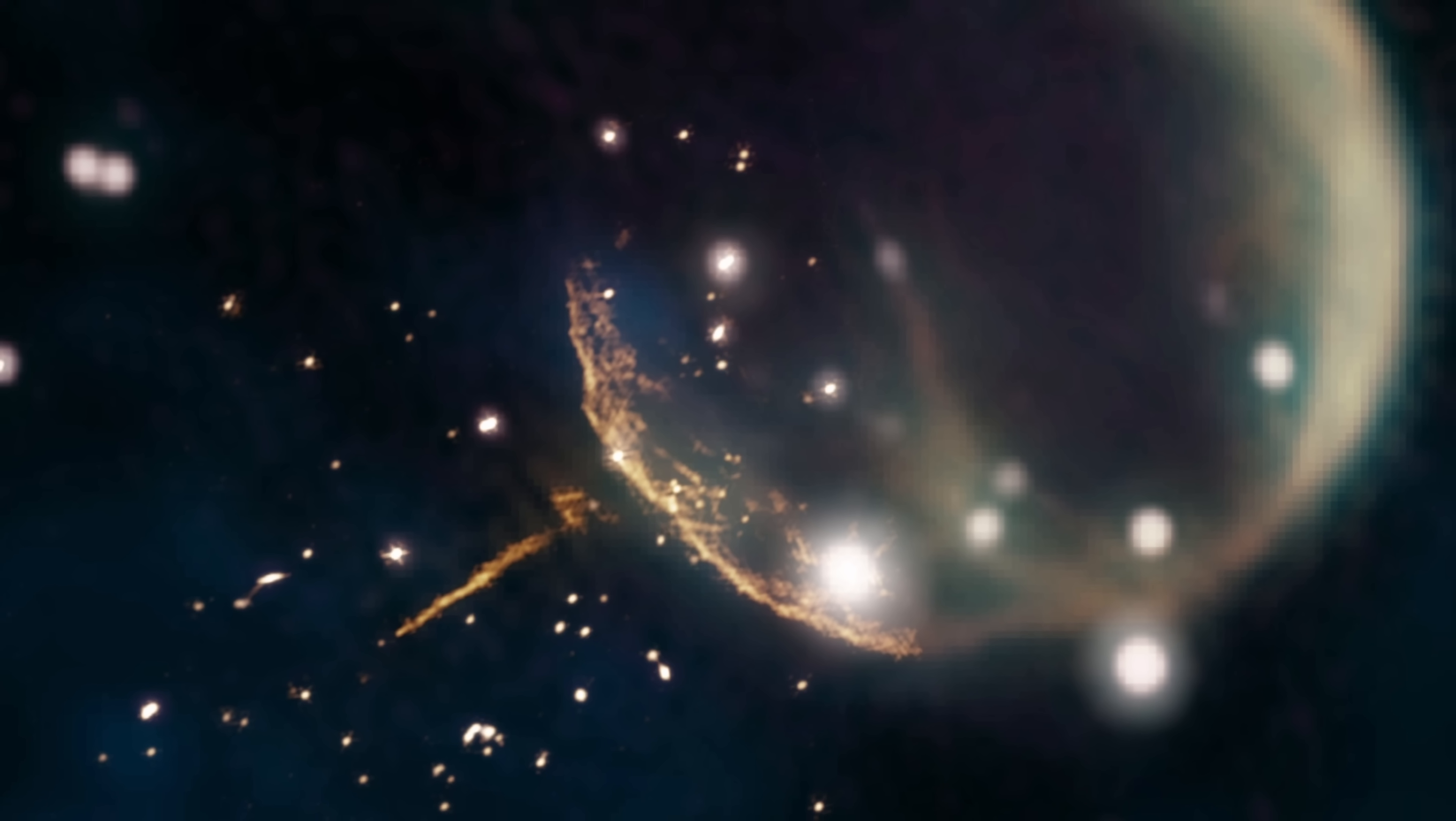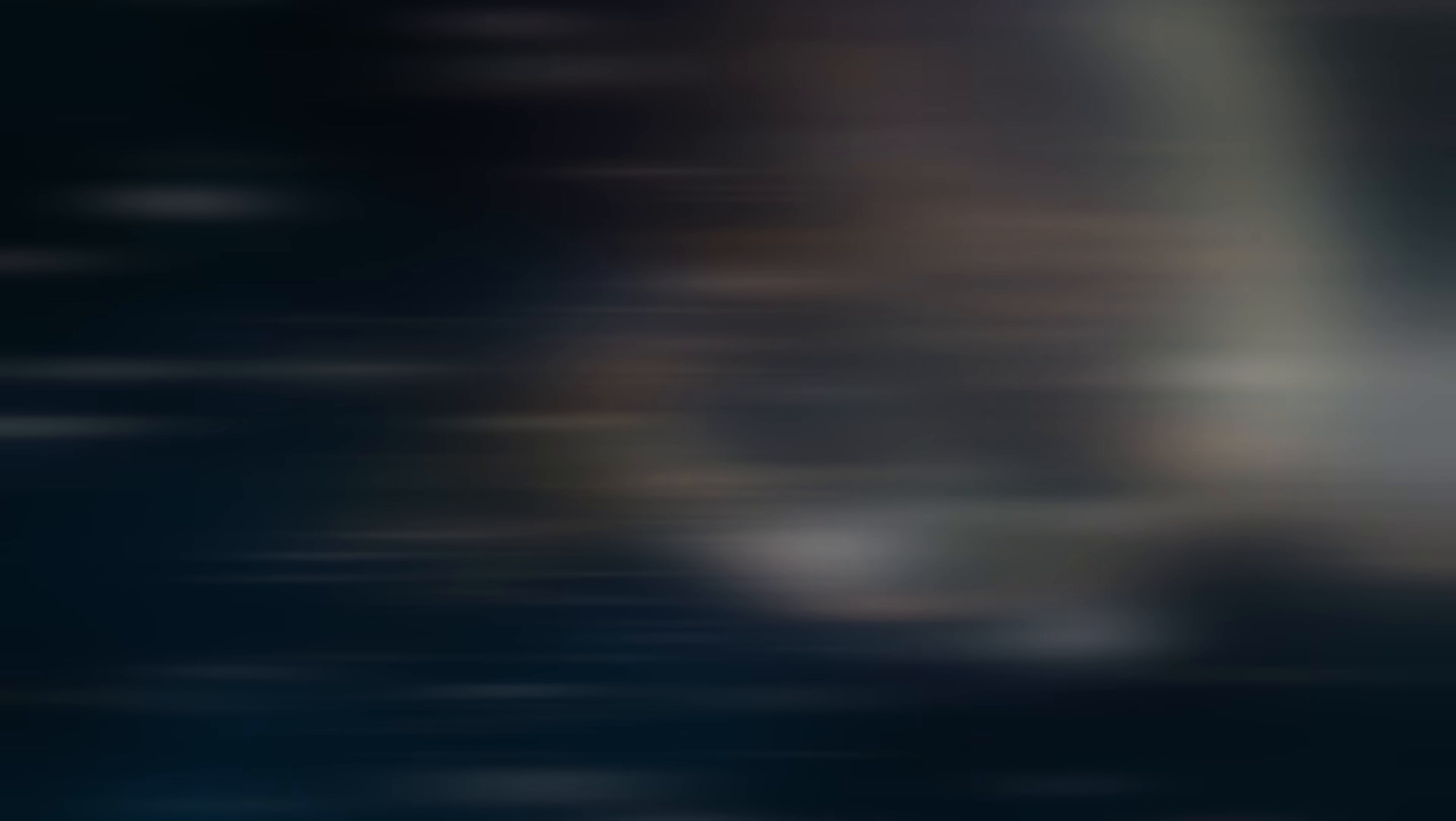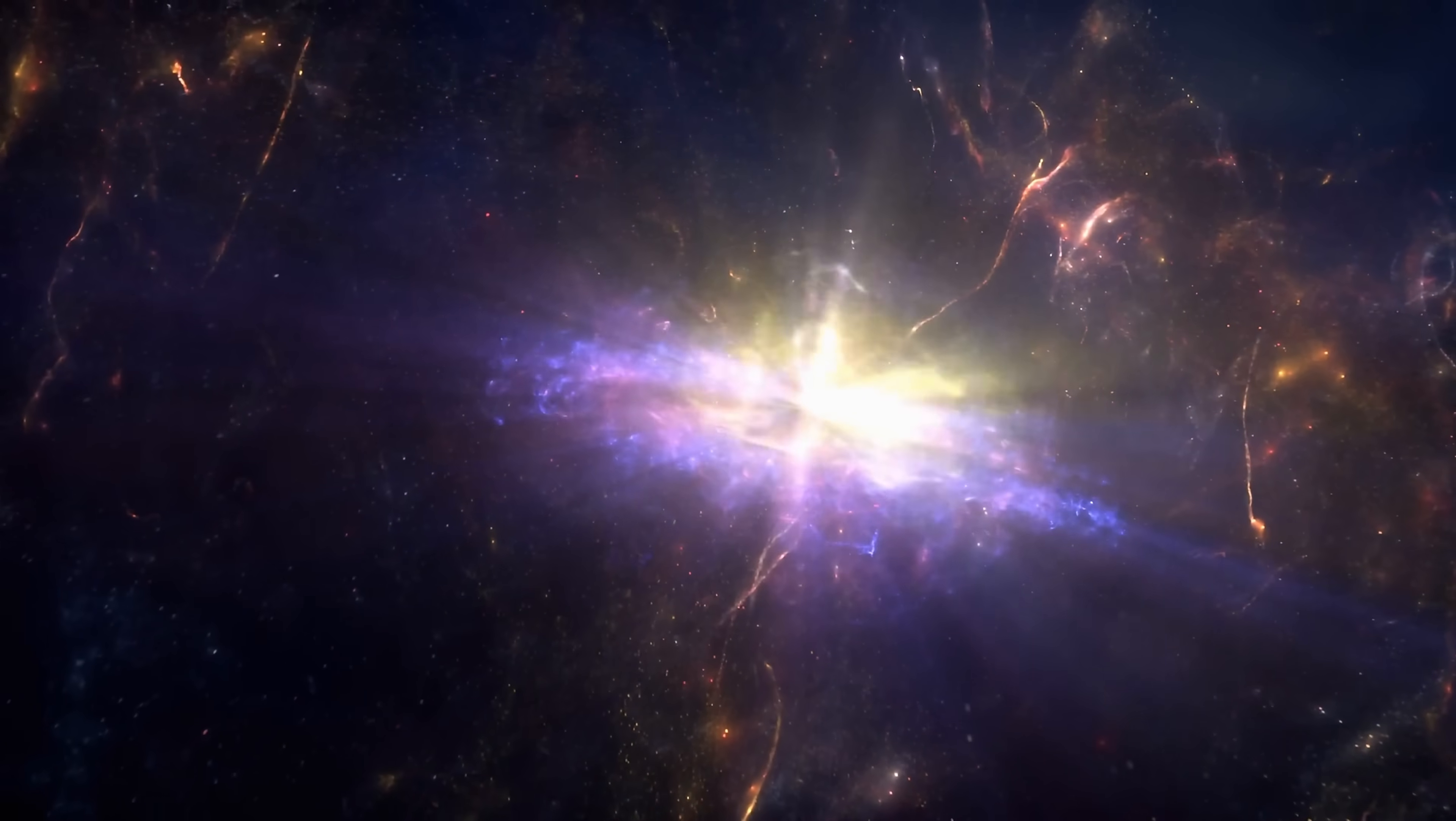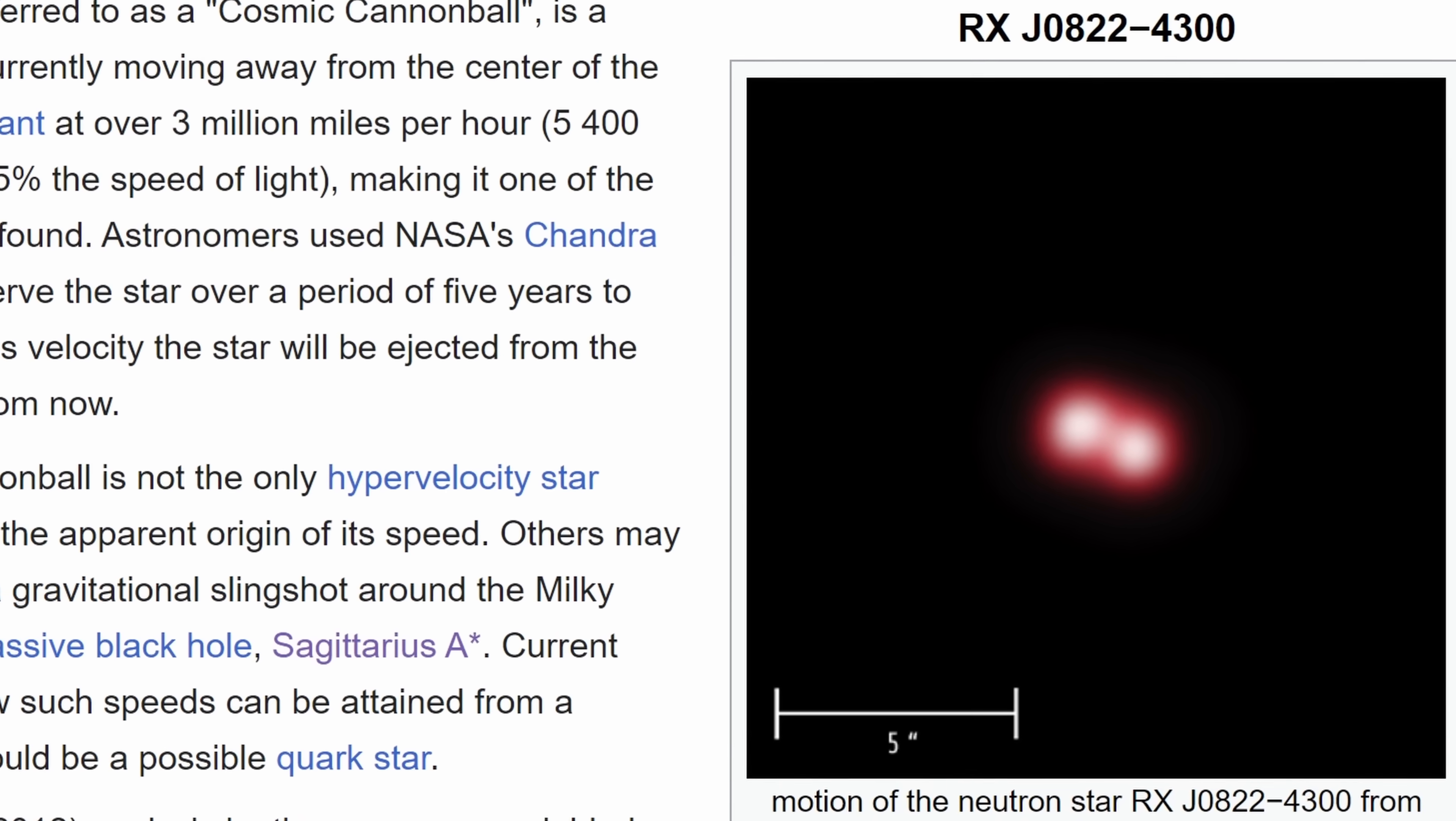We also have some examples of various neutron stars, like the one that you see right here, this is an actual image of one, that tell us of a different mechanism involving various supernova. At least one of these neutron stars has actually been discovered to travel at approximately 1500 km per second. It's the object right here, sometimes referred to as the cosmic cannonball.